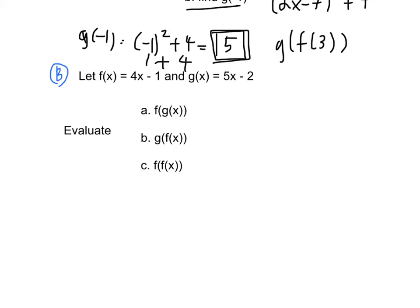Our next problem is let f of x equal 4x minus 1 and let g of x equal 5x minus 2. And we have three steps of evaluation here. First is f of g of x, then g of f of x, then f of f of x.